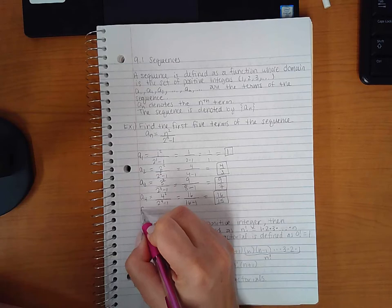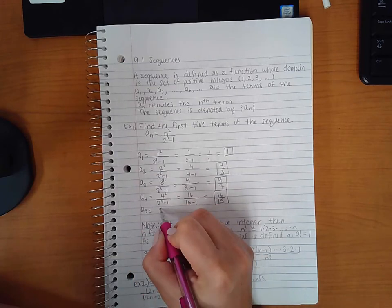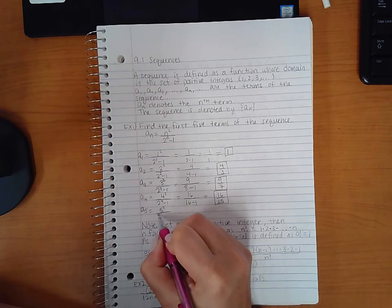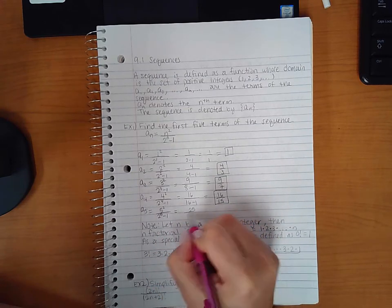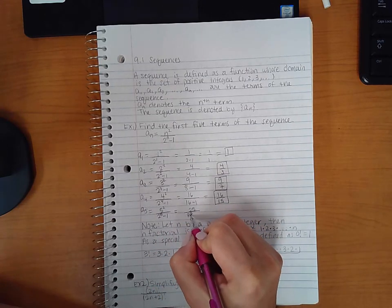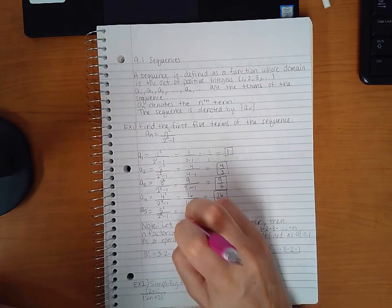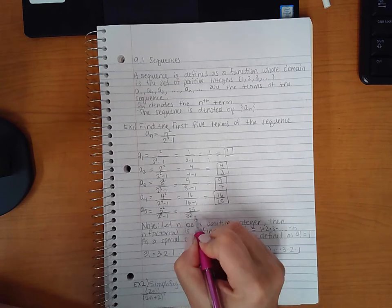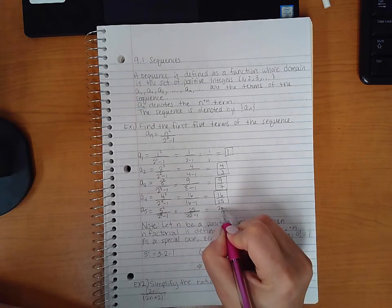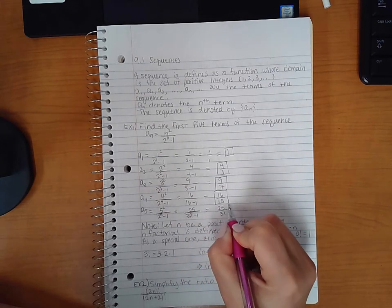And then finally 5 for n. So we're going to get 25 over 32, which is 25 over 31.